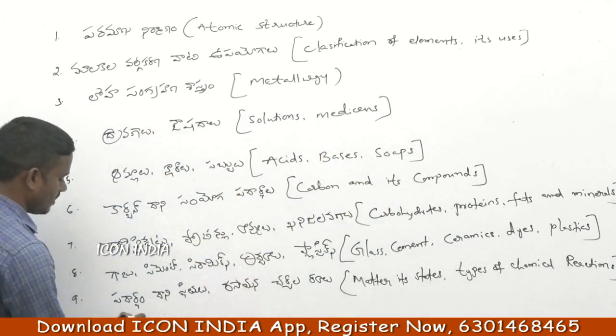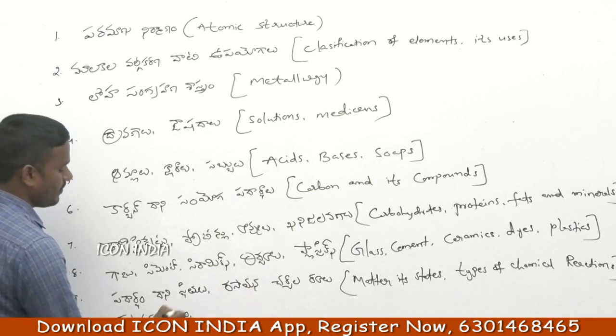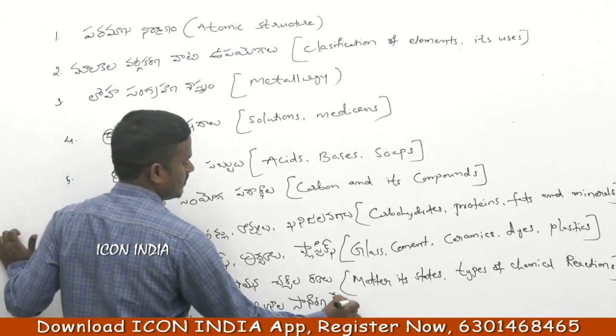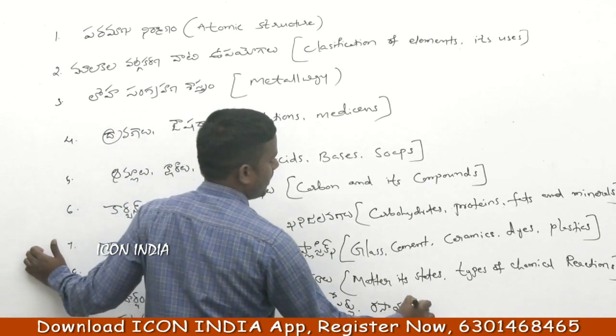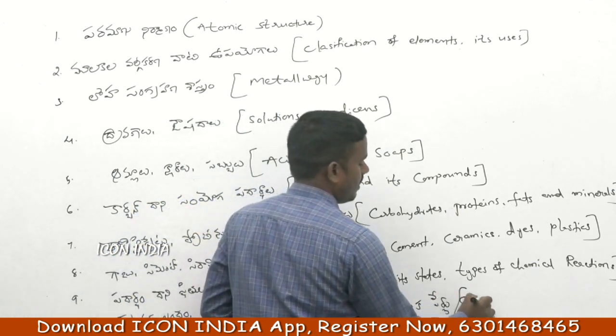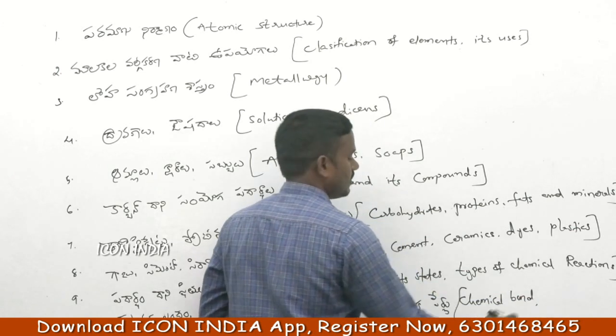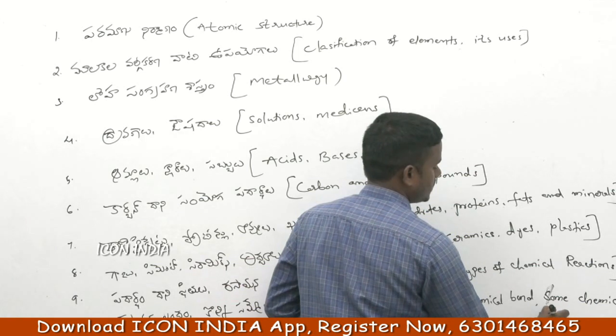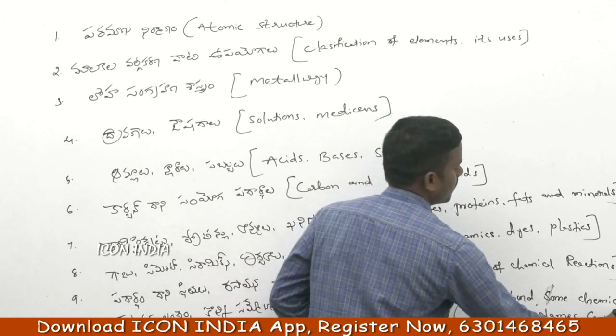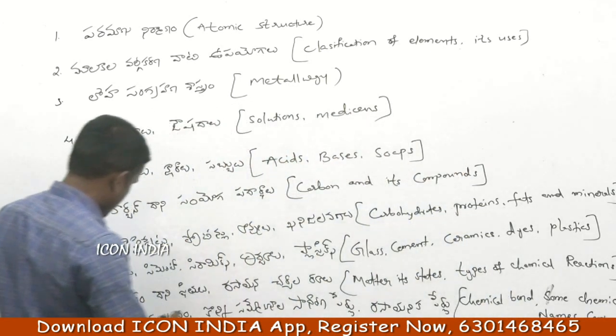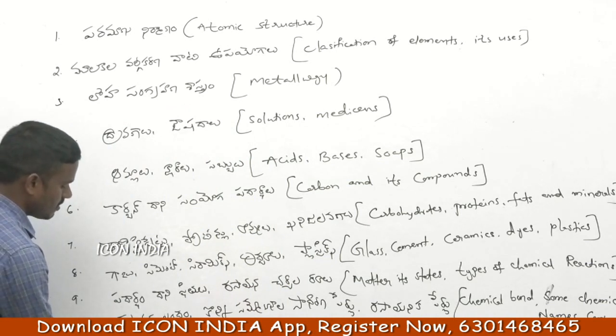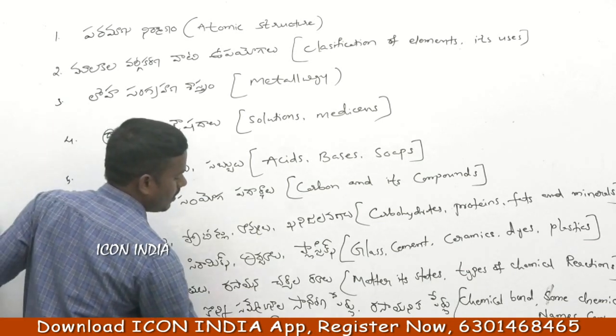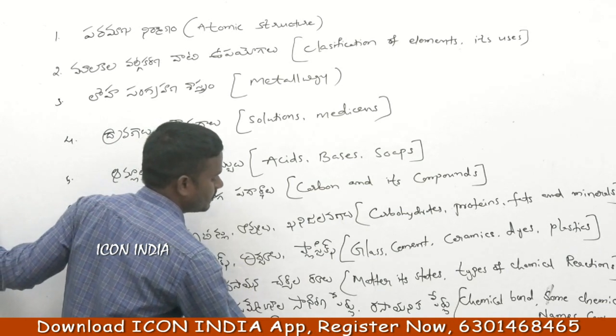Tenth topic is chemical bond, some chemical names and common names. Eleventh topic is coal, combustion, and fuel. So this is the entire syllabus of chemistry.